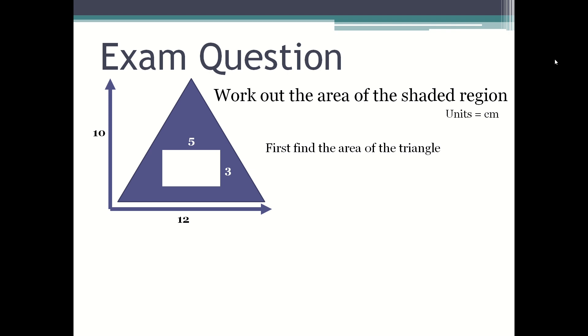First you find the area of the triangle. You state the formula, then input the values into the formula. So a half times ten times twelve equals sixty.